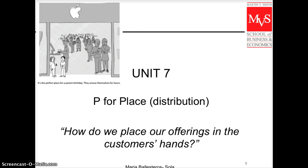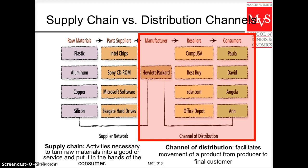The most important thing to get straight from the beginning is the difference between supply chain and distribution channels. The supply chain describes all the activities necessary to turn raw materials into goods or services that end up getting to the consumer. For a simple HP computer or printer, raw materials go to part suppliers, then to the manufacturer, who uses distribution channels to reach the end consumer. The channel of distribution is the movement of a product from the producer to the end consumer.